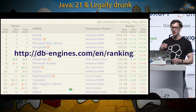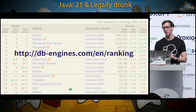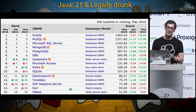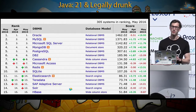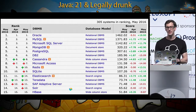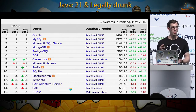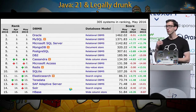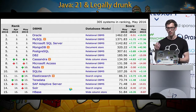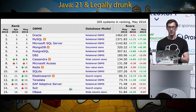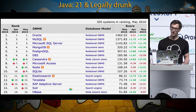DBEngines.com ranks how popular databases are, similar to the Tiobe index for programming languages. Oracle is still at the top, but MySQL is catching up. SQL Server is strong, but the fourth place is currently taken by MongoDB. Then there's Postgres. From the NoSQL world, Cassandra and Redis are popular, and Elasticsearch is at spot 11. In the next section, we'll look at Postgres from the relational world, then cover MongoDB, Cassandra, Redis, and Elasticsearch.